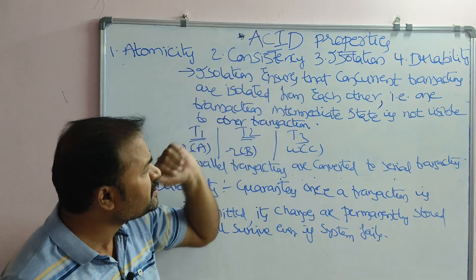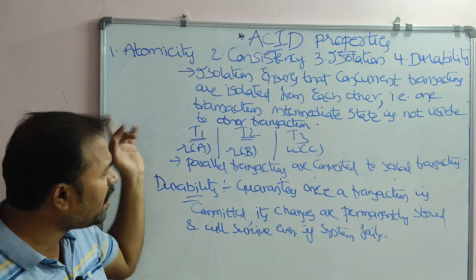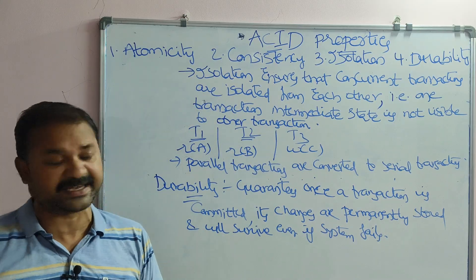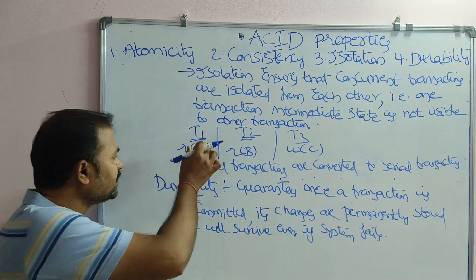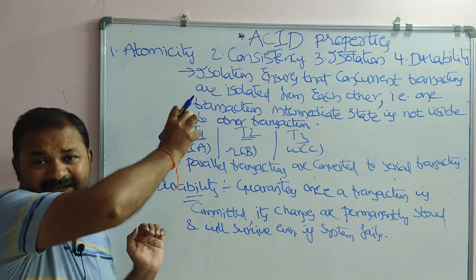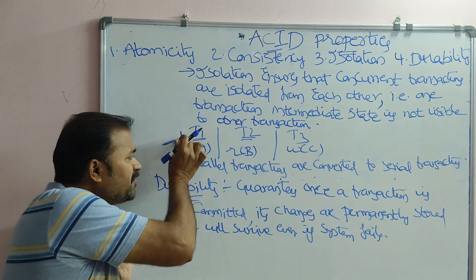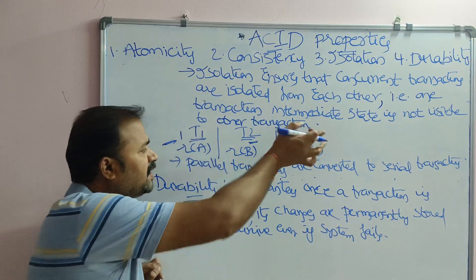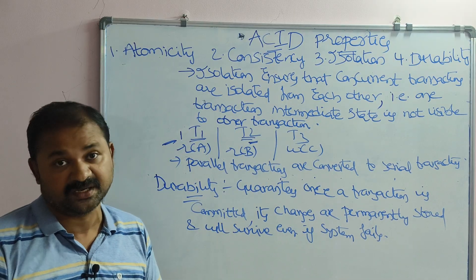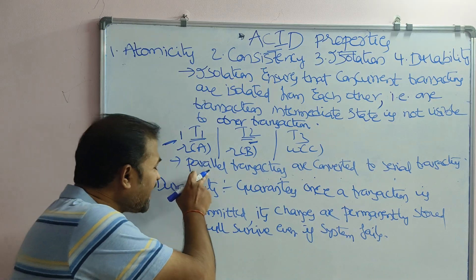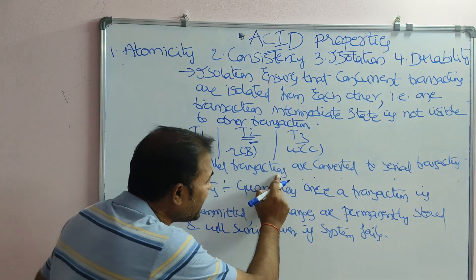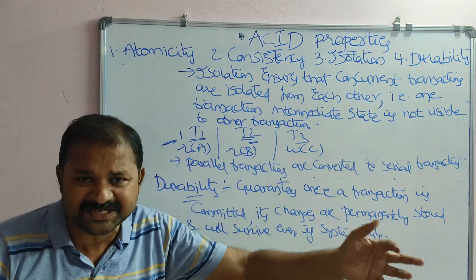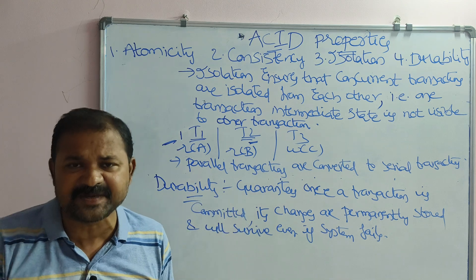Isolation ensures that concurrent transactions are isolated from each other — the intermediate state of one transaction is not visible to another transaction. With the help of isolation, we are converting parallel transactions into serial transactions, meaning one after another. The result of some instructions of T1 will not be visible to other transactions, and similarly for T2 and T3.